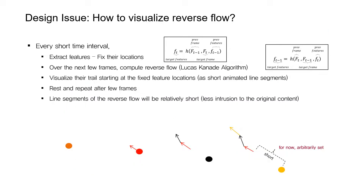So how do we visualize this reverse flow? We propose that at every short time interval we extract visual features, and over the next several frames compute the reverse flow by switching the before and after time parameters, adding trails starting at the fixed locations of the extracted features. Note that the features are only extracted once at the start of the time window and their locations are fixed. The feature extracted at the start of the window is the leftmost orange one. Then as it moves, the reverse flow is computed but added starting at the fixed location of the feature.